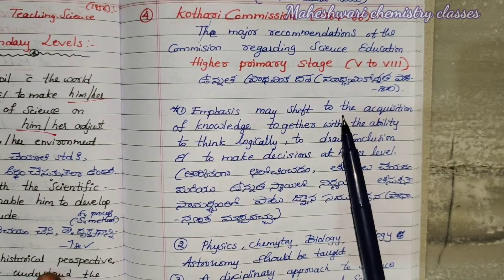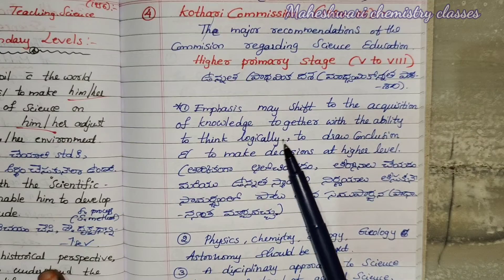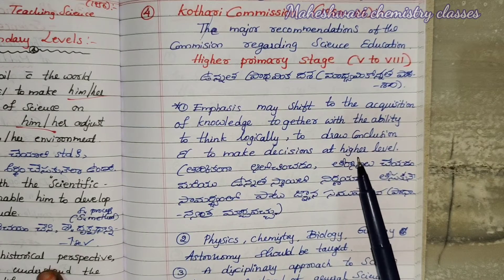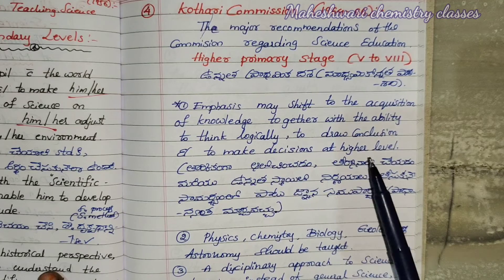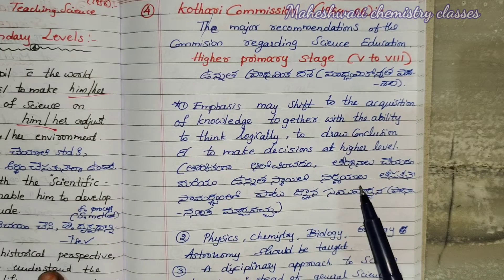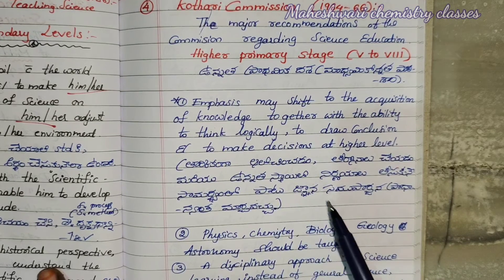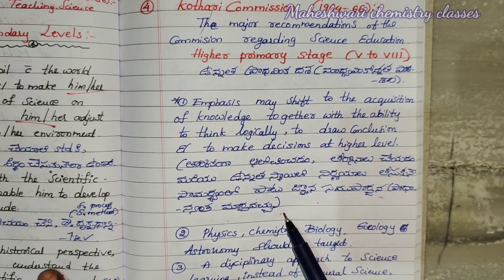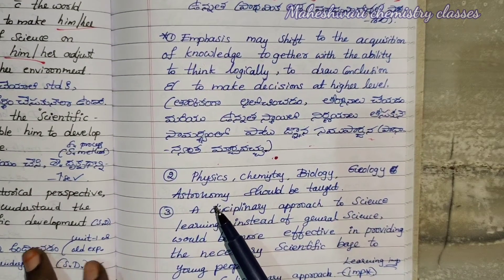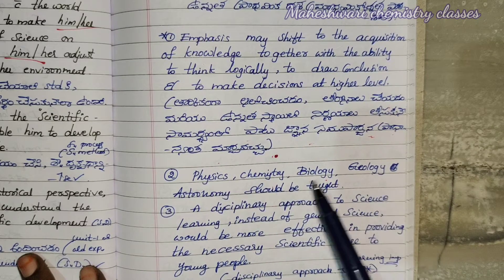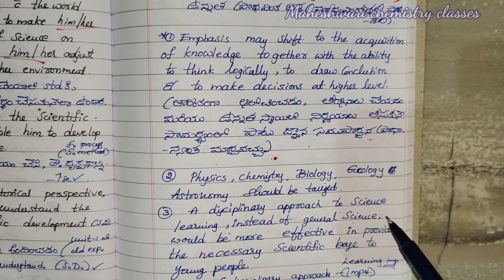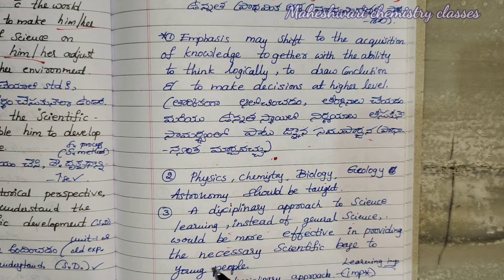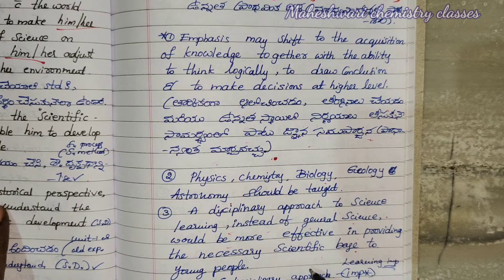First one: emphasis may shift to the acquisition of knowledge together with the ability to think logically, to draw conclusions, and to make decisions at a higher level. Second one, at the higher primary stage: physics, chemistry, biology, geology, astronomy, etc. Third point: a disciplinary approach to science learning instead of general science would be more effective in providing the necessary scientific base to young people.